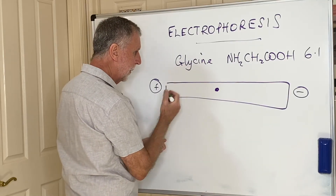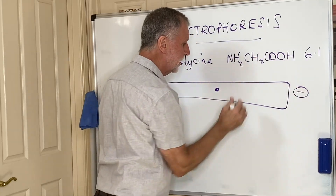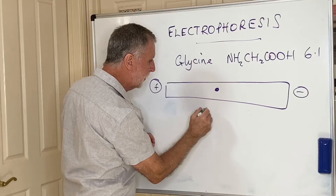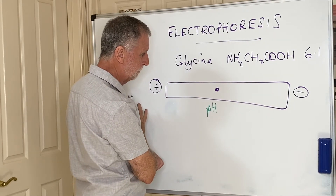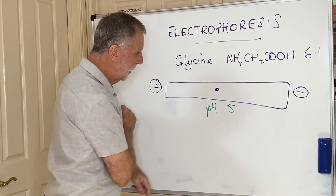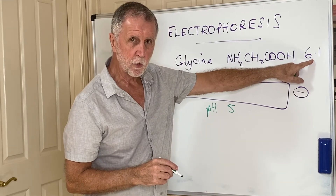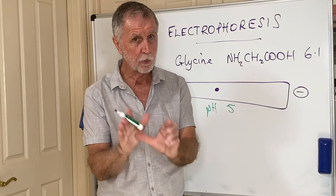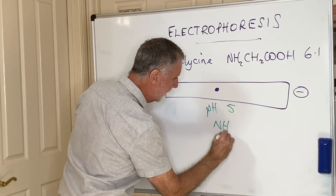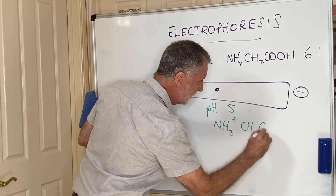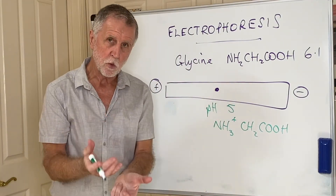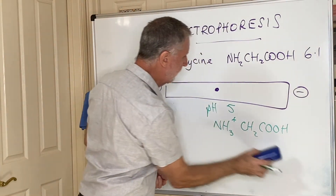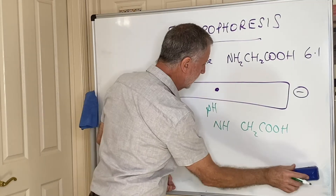To move glycine, you change the pH of the solvent. If the pH is set to 5 — below glycine's isoelectric point of 6.1 — the acidic solution forces glycine to act as a base and accept a proton, giving it an NH3+ group. Glycine becomes positively charged and travels toward the negative electrode. If the pH is raised above 6.1, say to pH 7, glycine is now relatively acidic and donates a proton, becoming negatively charged and traveling toward the positive electrode.